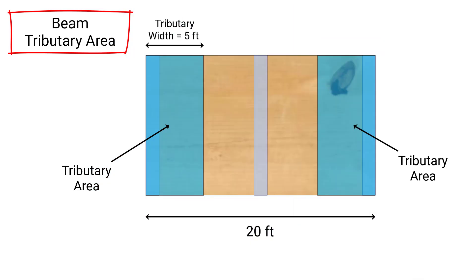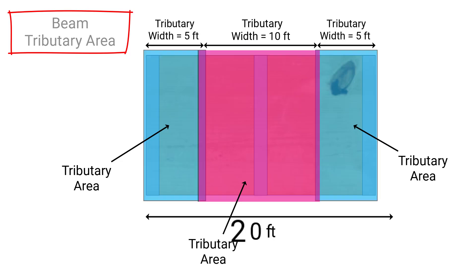The tributary area for the very far right beam is actually the same as the tributary area for the left beam, and that will also have a tributary width of 5 feet. And the area that's left over will be the tributary area for the middle beam as shown in pink, and that has a tributary width of 10 feet.